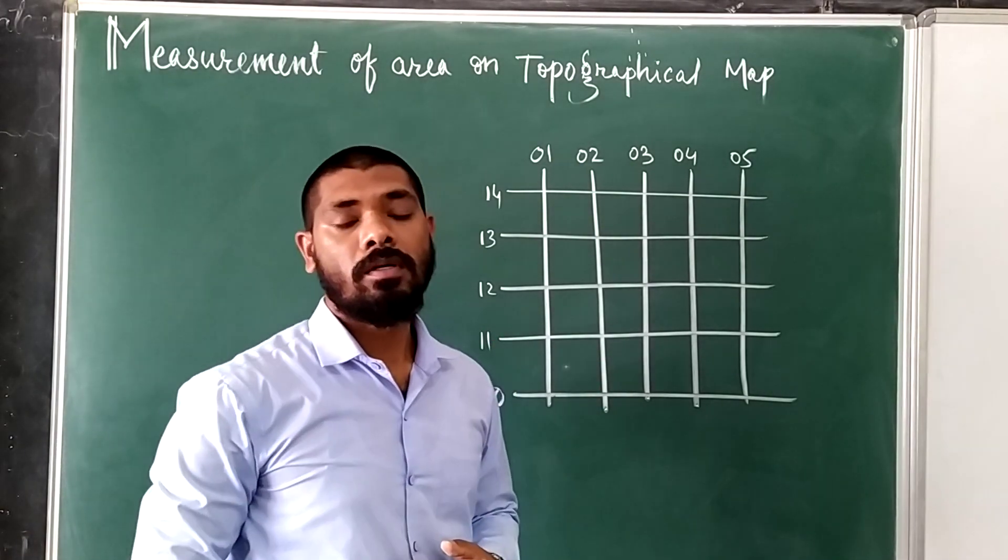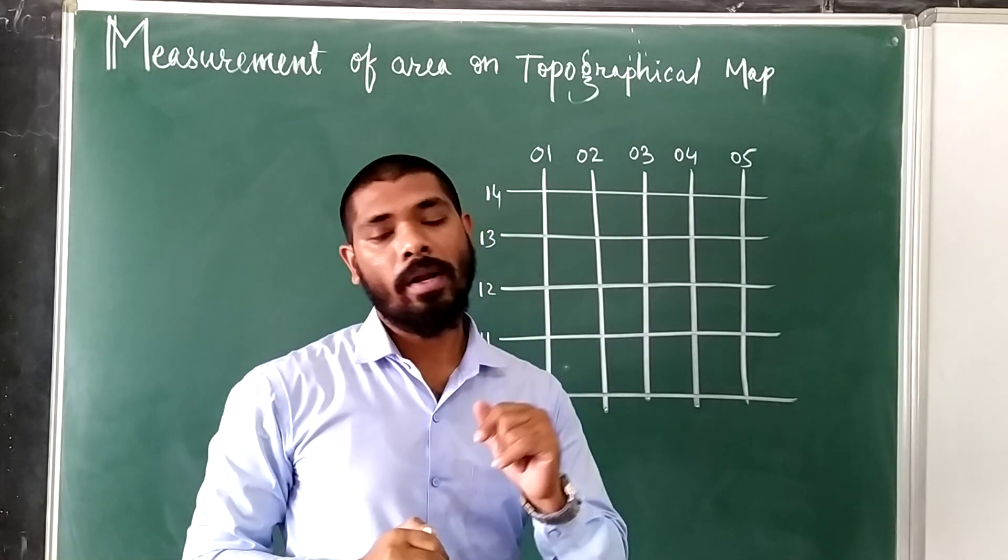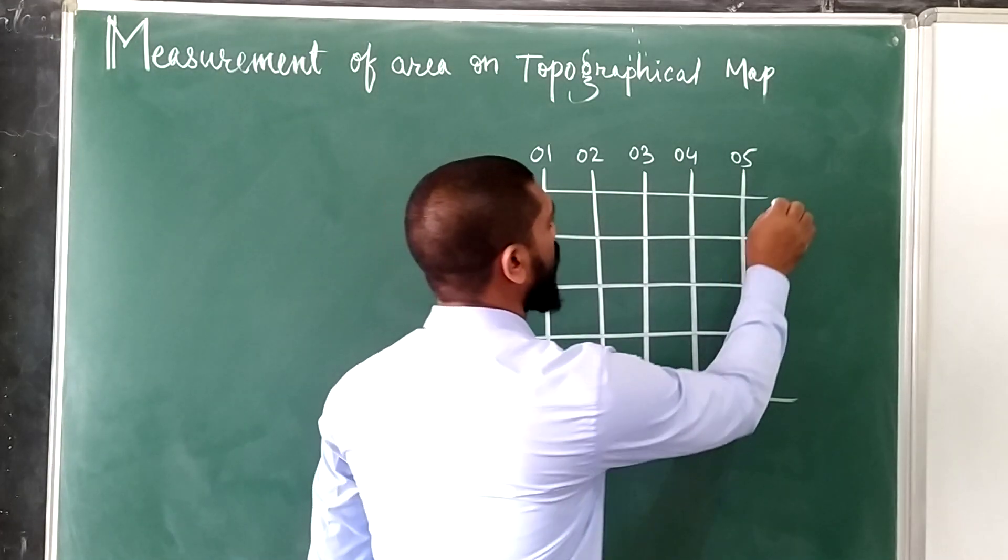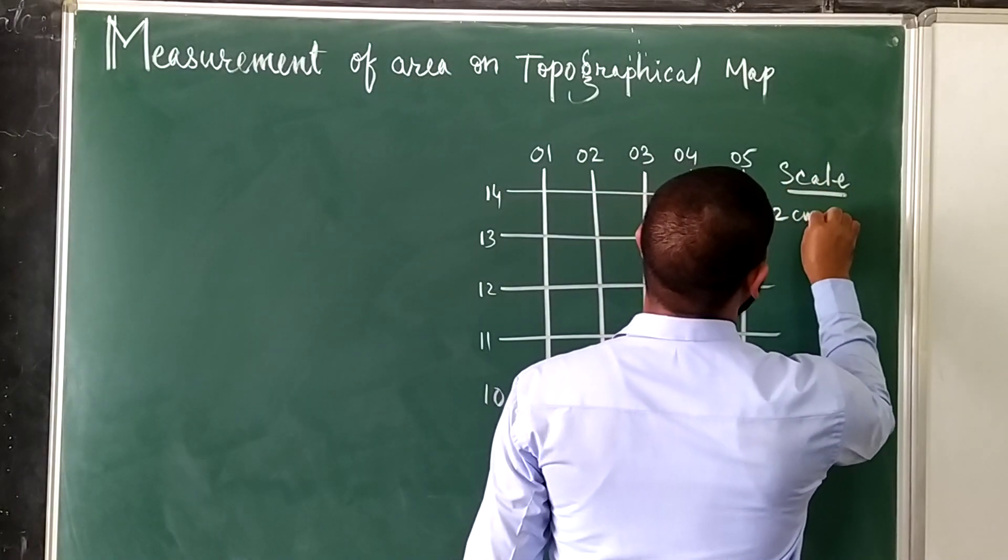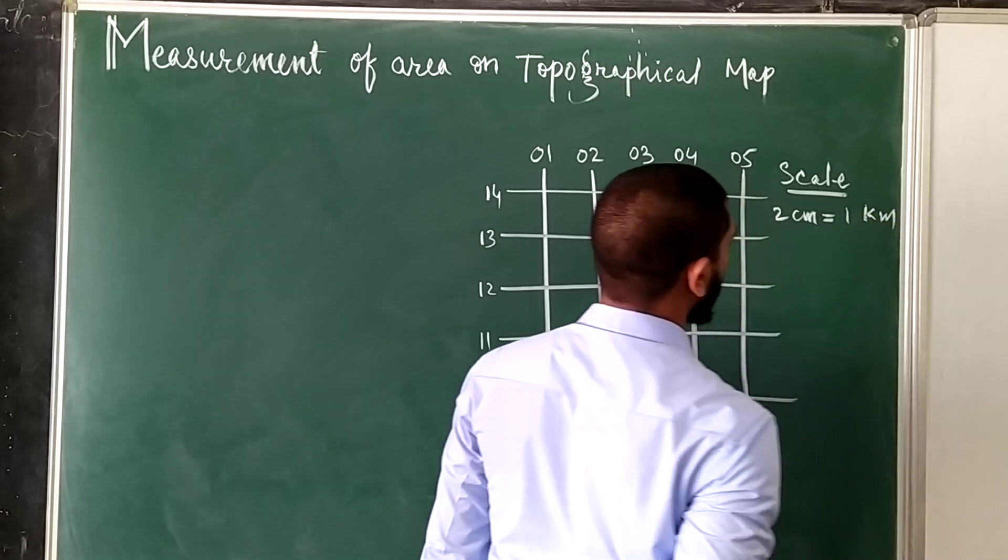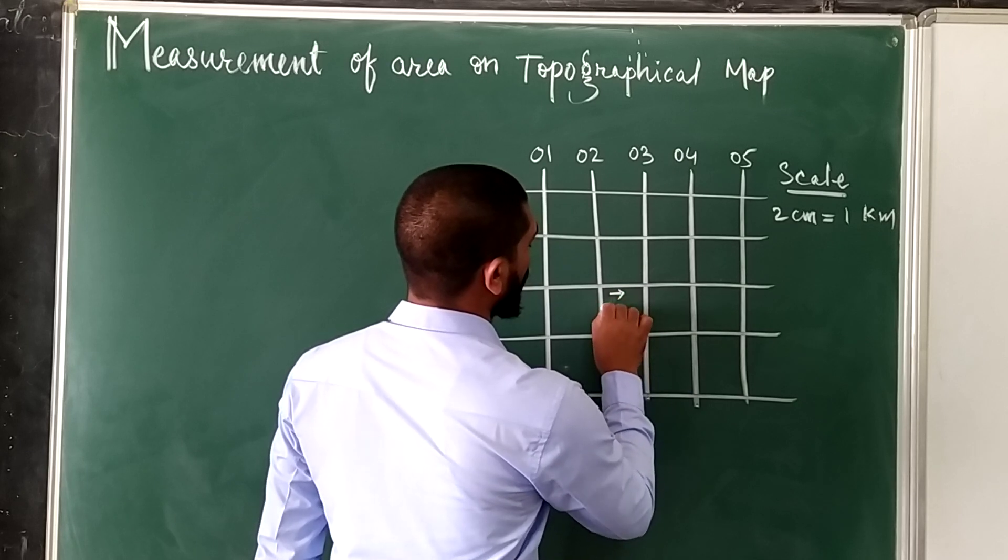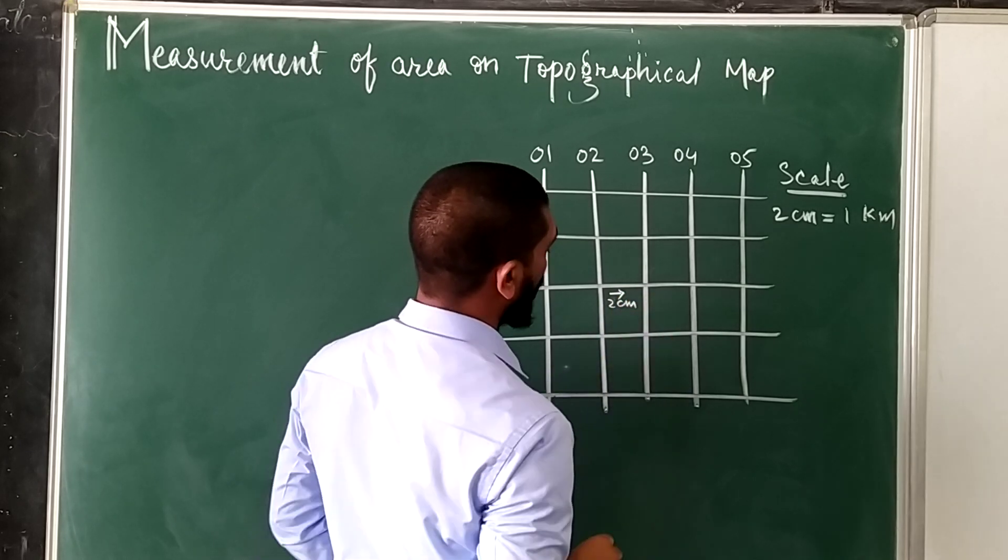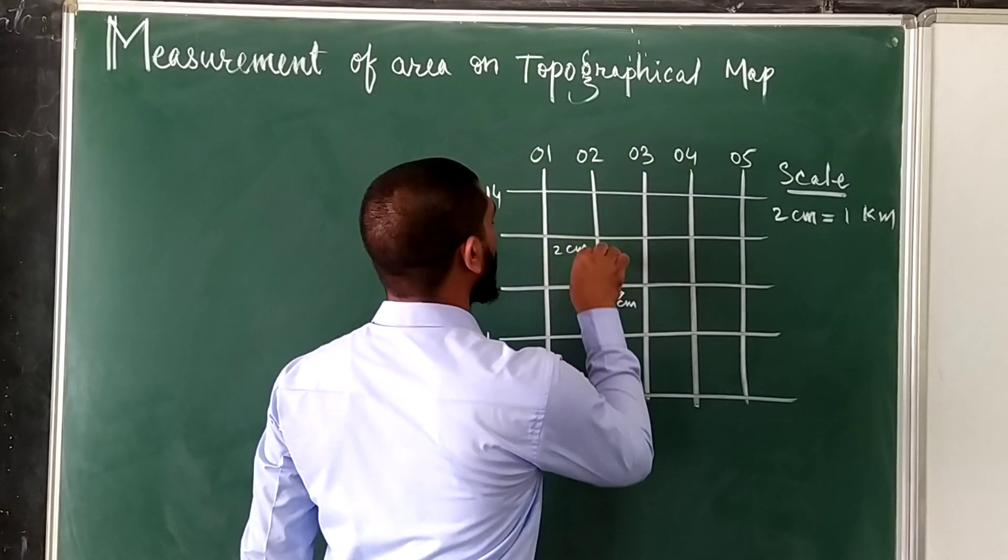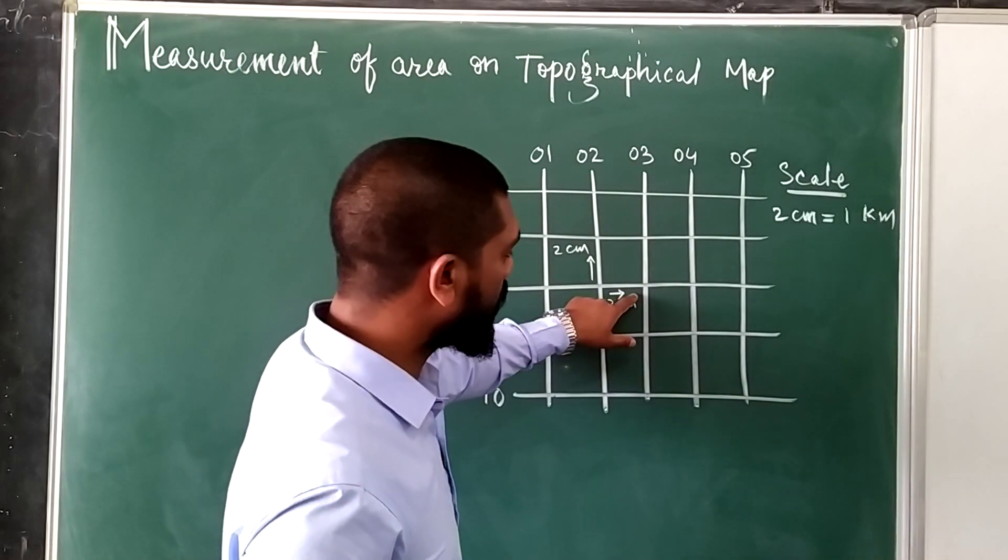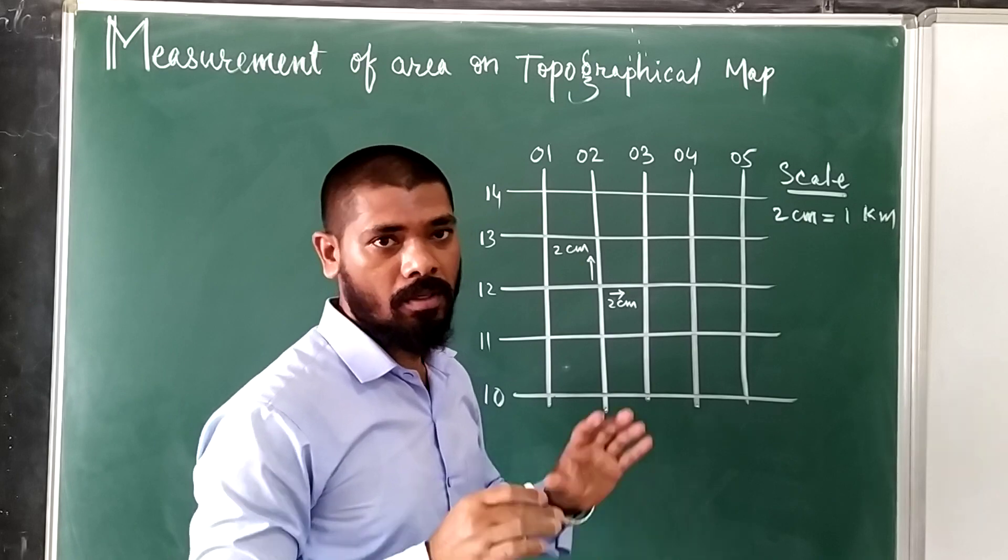As we already know that the scale of the map is 2 cm equals 1 km. This is grid. This 2 cm equals 1 km. This is also 2 cm equals 1 km. So 1 km, 1 km. So complete grid will be of 1 square km, right?